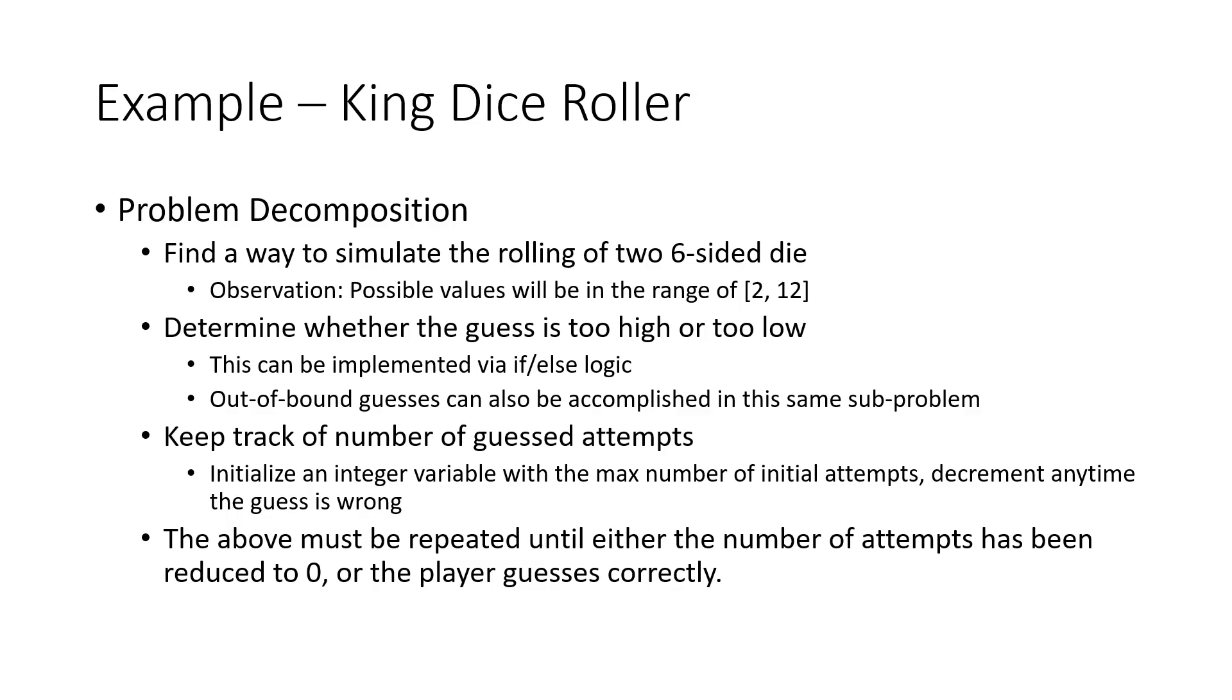Another sub-problem that I was able to identify in that problem description was determine whether the guess is too high or too low. This can easily be solved using if-else logic just by ensuring that when we compare the player input to the actual value, we can guide them to let them know whether it's too high or too low. We can also place in the out-of-bound guesses within the same sub-problem because out-of-bound guesses will be described as anything that's out of logical bound of the possible values of the two six-sided die. We've already determined that part of this is on knowing that for two six-sided die, the lowest value will be two, the highest value will be 12. So again, we are using known observations to our advantage to be able to solve these kinds of problems.